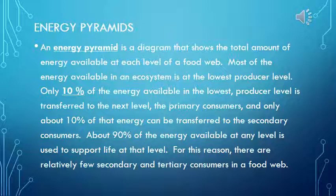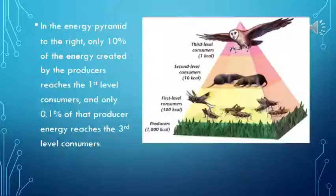About 90% of the energy available at any level is used to support life at that level. For this reason, there are relatively few secondary and tertiary consumers in a food web. In the energy pyramid shown, only 10% of the energy created by producers reaches the first-level consumers, and only one-tenth of one percent of that producer energy reaches the third-level consumers.